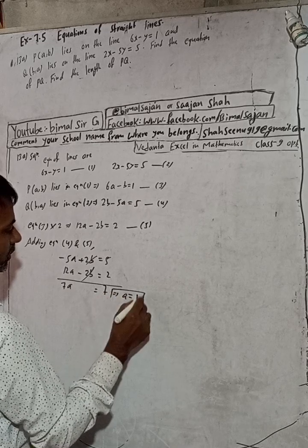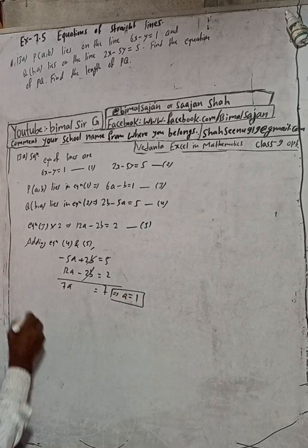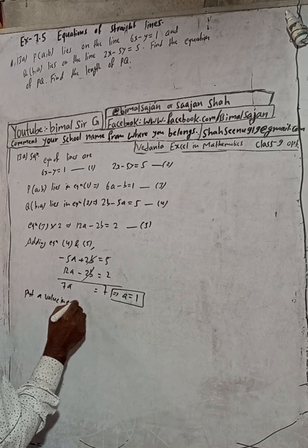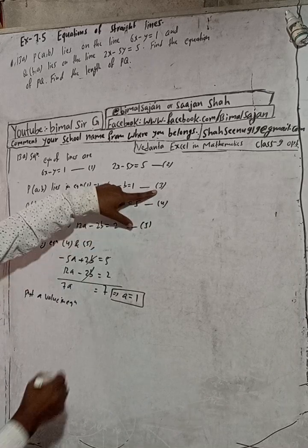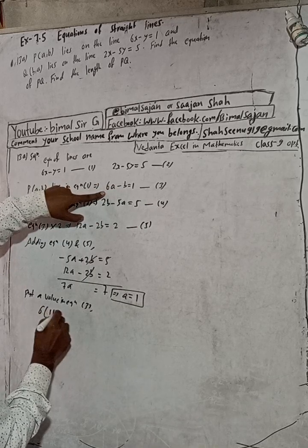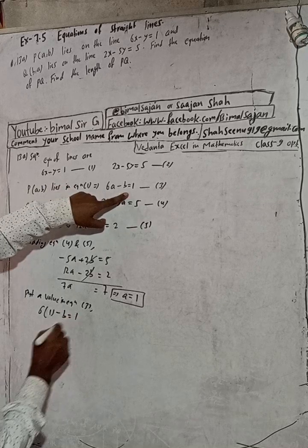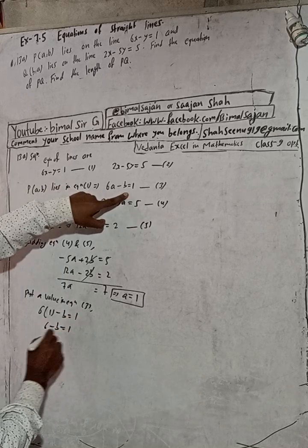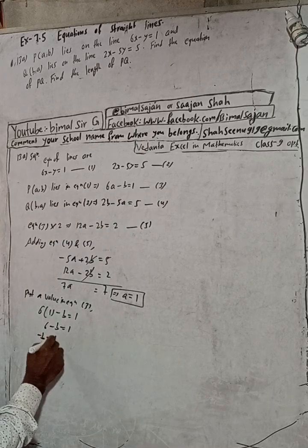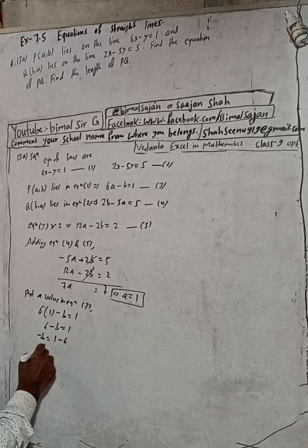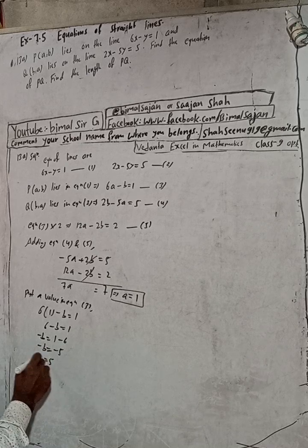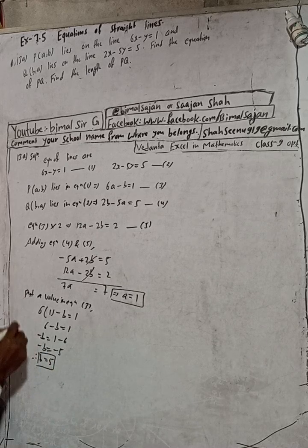Solving 7a equals 7 gives a equals 1. Substituting a equals 1 into equation 3: 6 times 1 minus b equals 1, so 6 minus b equals 1, giving minus b equals 1 minus 6 equals minus 5. Therefore b equals 5.